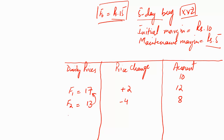On day 3 the price further fell to 10 rupees (F3). We write minus 3 in the price change column, because it's a 3 rupee decrease from day 2, and we decrease the margin account by a further 3 rupees, bringing it to 5. We're still not below the maintenance margin level, so there won't be a margin call.